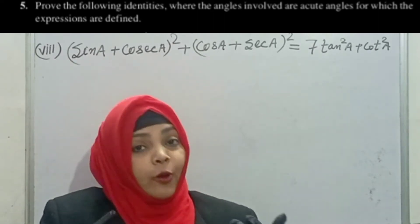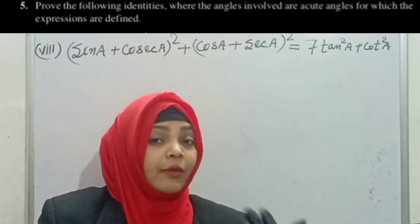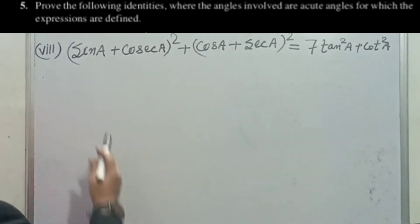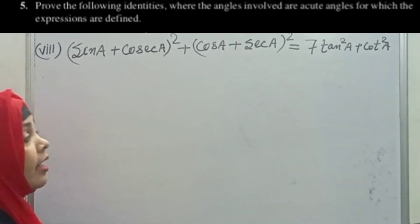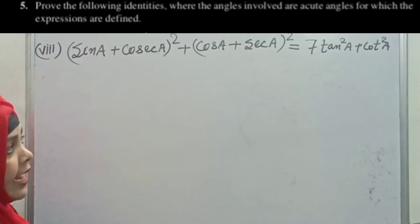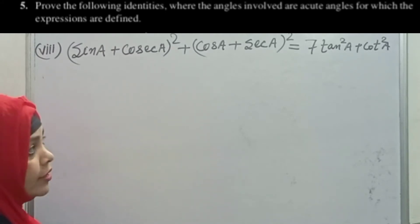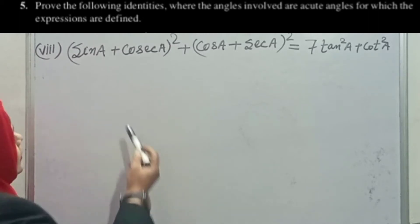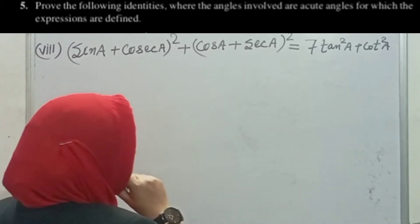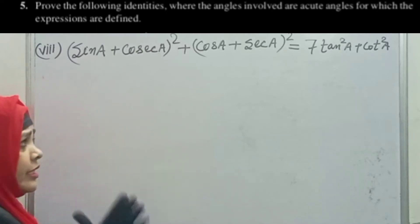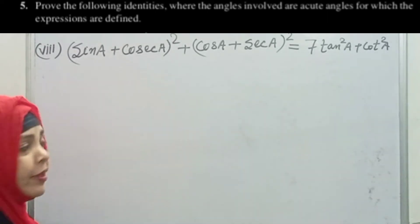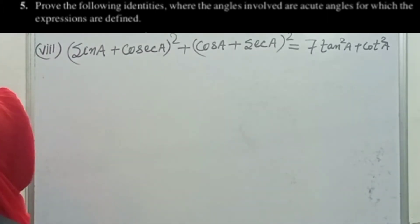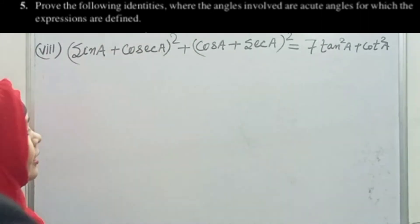The expression is (sin A + cosec A)² + (cos A + sec A)² equals 7 + tan²A + cot²A. We know the relation between sin, cos, and tan. The first thing we will do is expand using the (a + b) whole square formula.